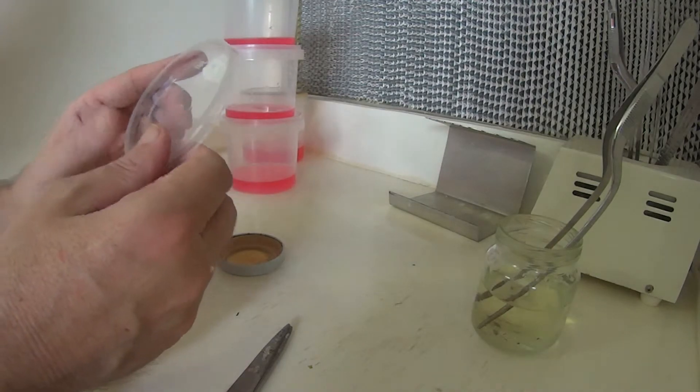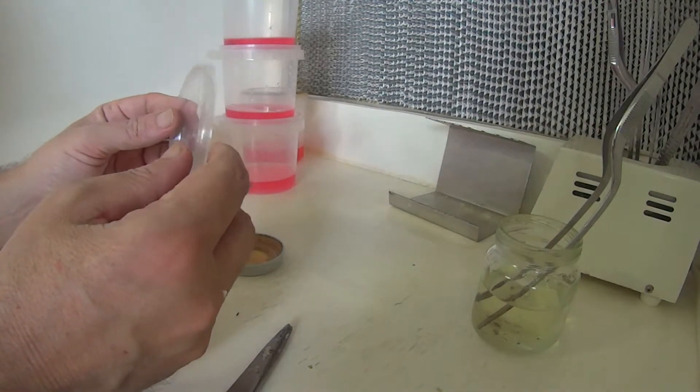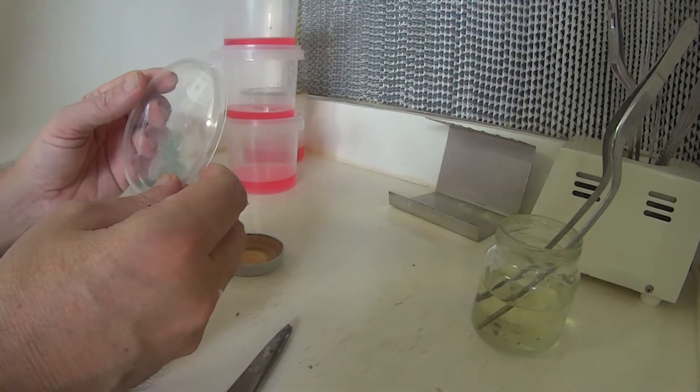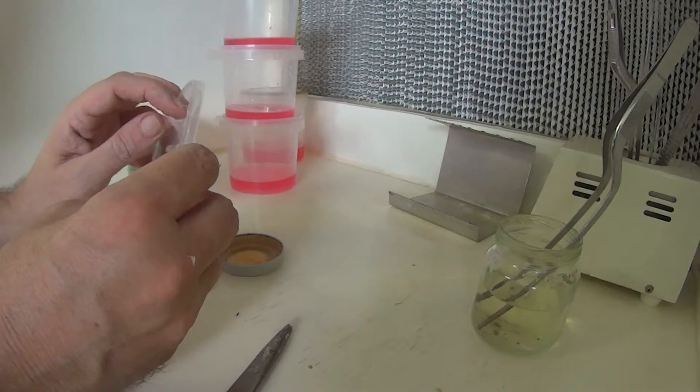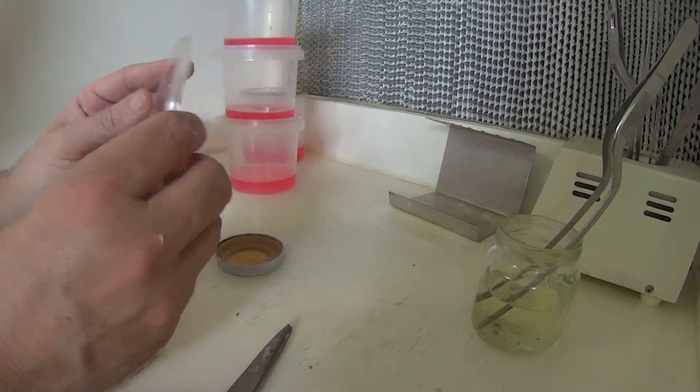And that can be autoclaved or pressure cooked, and it doesn't come off. I don't know how long it lasts for. I've reused lids like this dozens of times, and it doesn't seem to come off. It's a fairly permanent sort of thing.